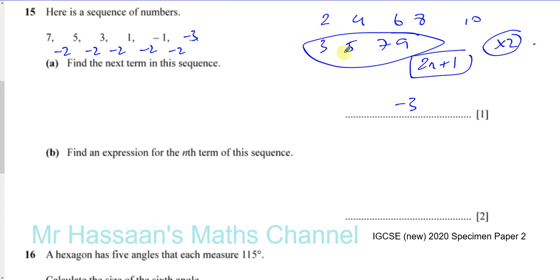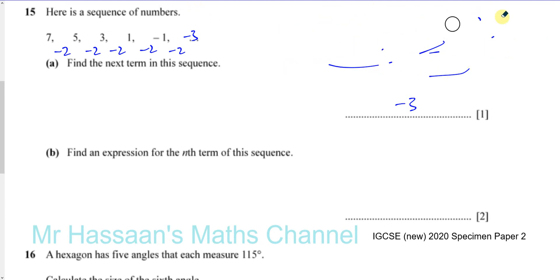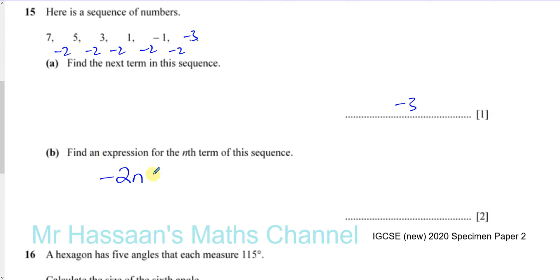Everything is 1 more than the multiples of 2, so it's 2n plus 1. So it's going down by 2 every time, so it's got something to do with the times table of minus 2 — the negative 2 times table — so minus 2n. Minus 2n generates the negative 2 times table: the first number will be minus 2, then minus 4, then minus 6, and minus 8.